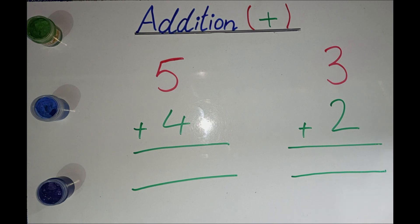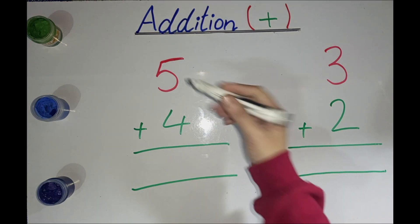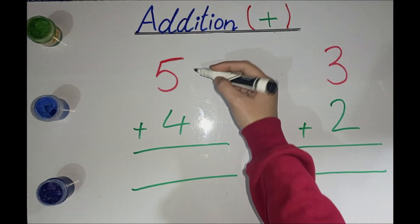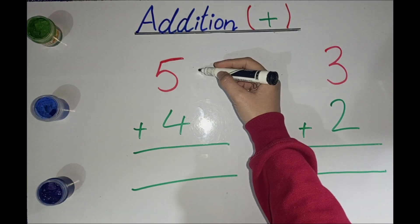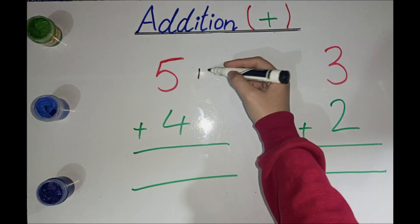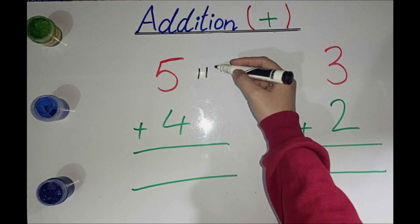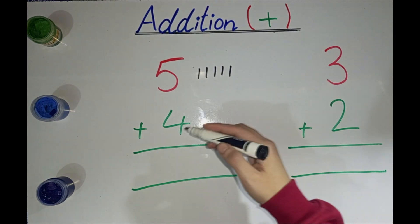What is this number? 5. Now make 5 lines: 1, 2, 3, 4, 5.